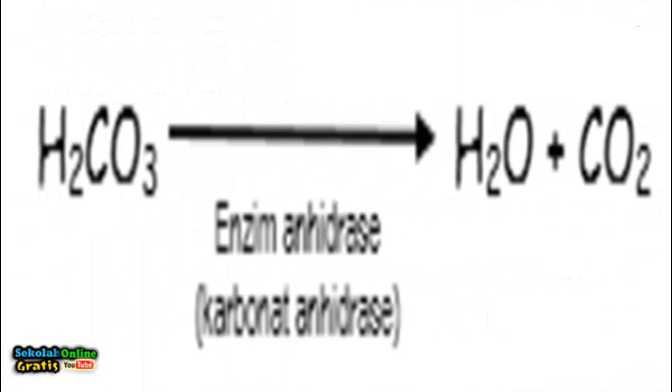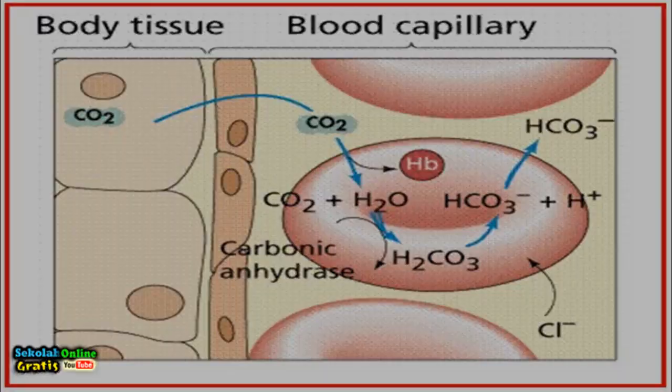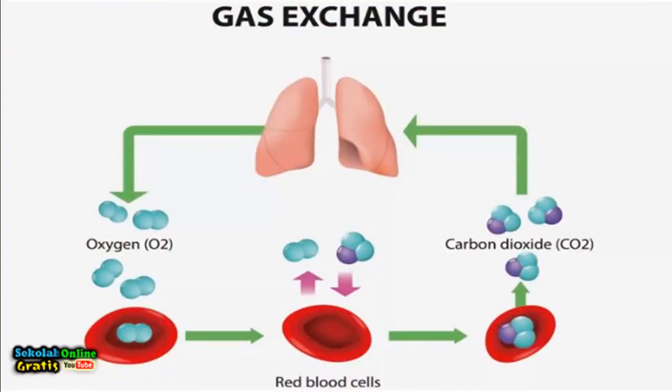HCO3 ions leave the red blood cells to the blood plasma by diffusion through a special slit. This process occurs because the concentration of ions in red blood cells is higher than the concentration in blood plasma. During the diffusion process chloride ions enter the red blood to maintain the balance of ions in the blood due to the release of ions. The reaction that occurs in the circulatory system is the opposite of the reaction in respiration namely CO2 diffuses out of the red blood cells to exit the lungs.